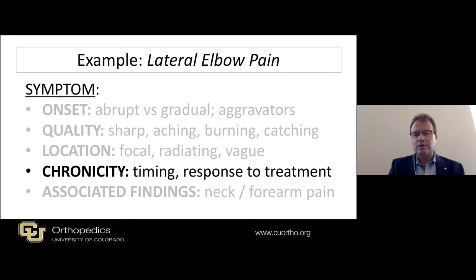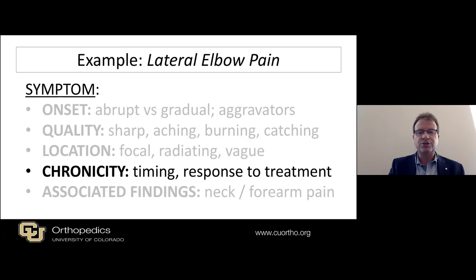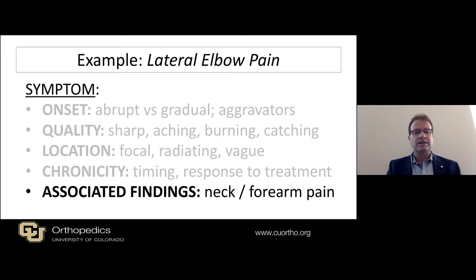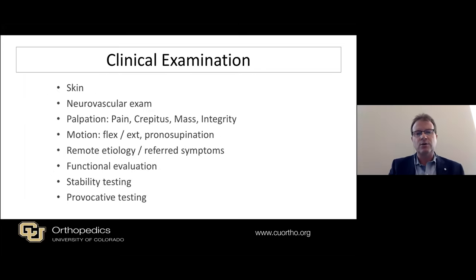Chronicity is also important — not just for timing of onset, but also what has happened in the past in terms of response to treatment. Did they get better after an injection or a certain treatment modality? And critically, the associated findings: Is there neck pain associated with worsening symptoms? Do their symptoms radiate to the forearm? Asking these key questions is really critical.